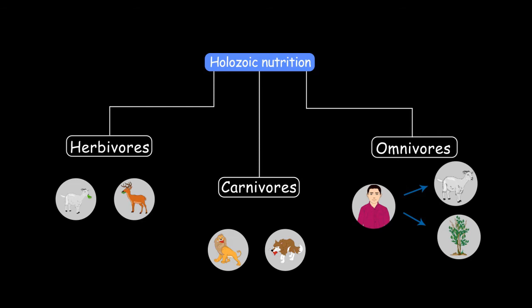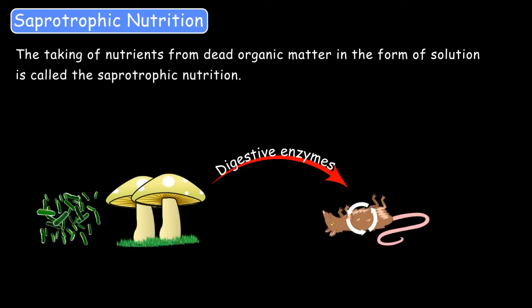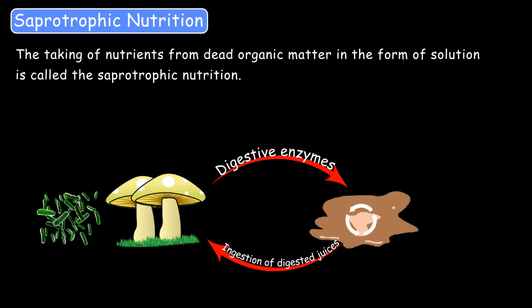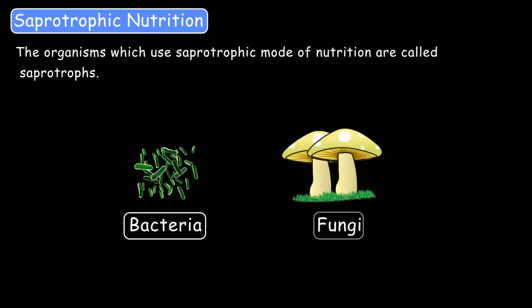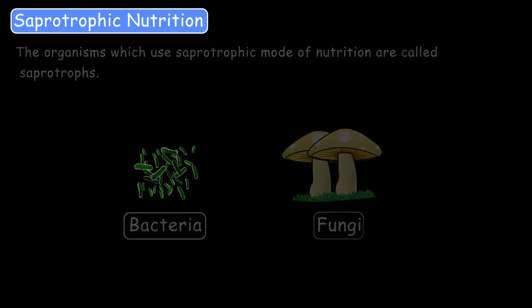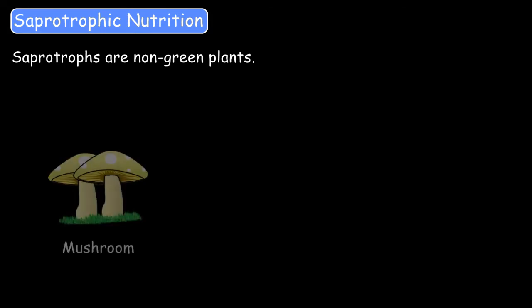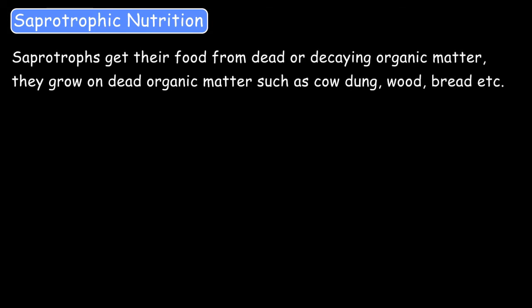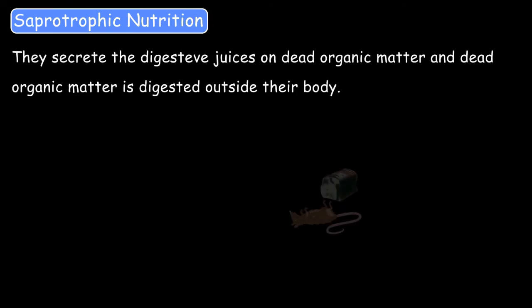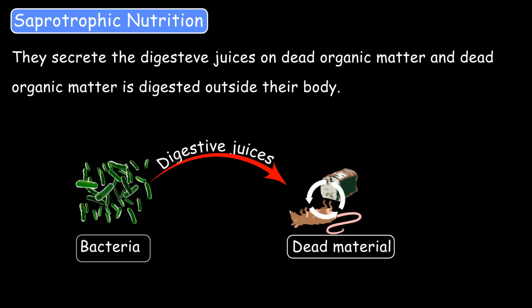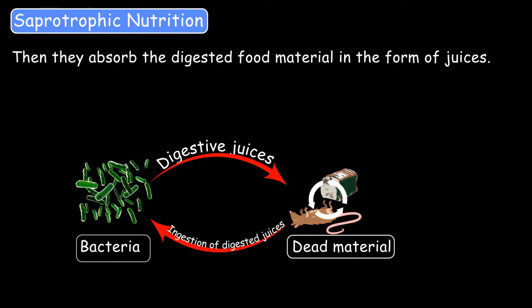Now let's learn about the second type of heterotrophic nutrition, which is saprophytic nutrition. Saprophytes, or decomposers, take nutrition from dead organic matter in the form of a solution — this is called saprophytic nutrition. Organisms that use this mode are called saprophytes; for example, fungi. They are non-green plants — examples are mushrooms, yeast, and bacteria. They grow on dead organic matter such as cow dung, wood, and bread. They secrete digestive juices onto dead organic matter, which is digested outside of their body. They then absorb the digested food material in the form of juices from that organic matter.